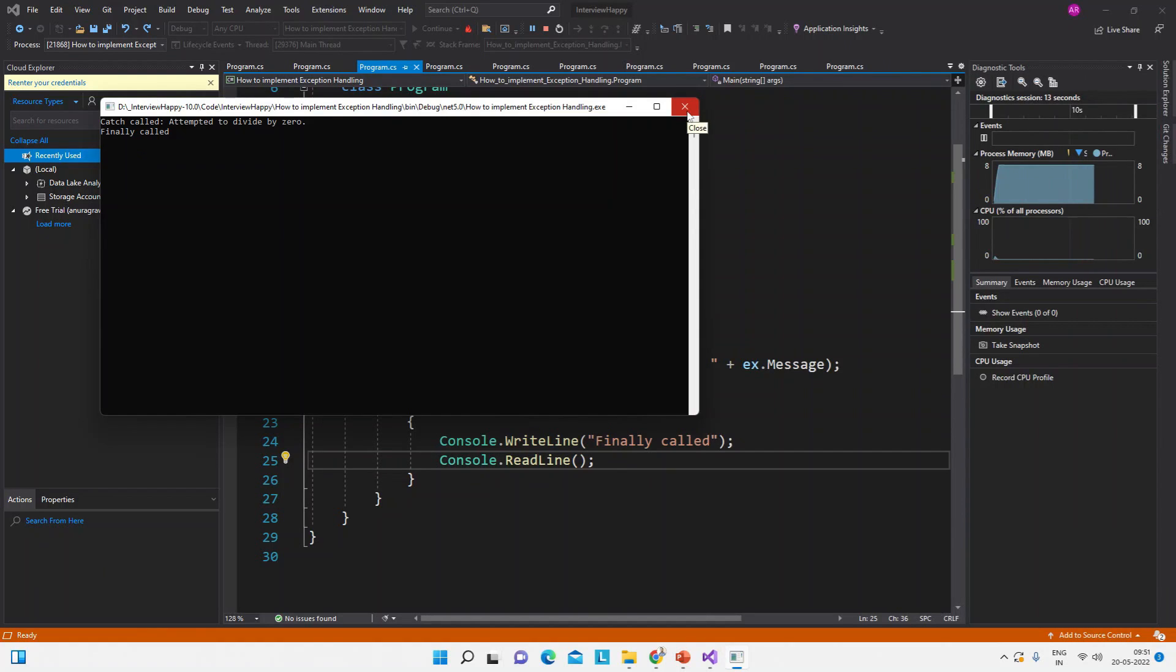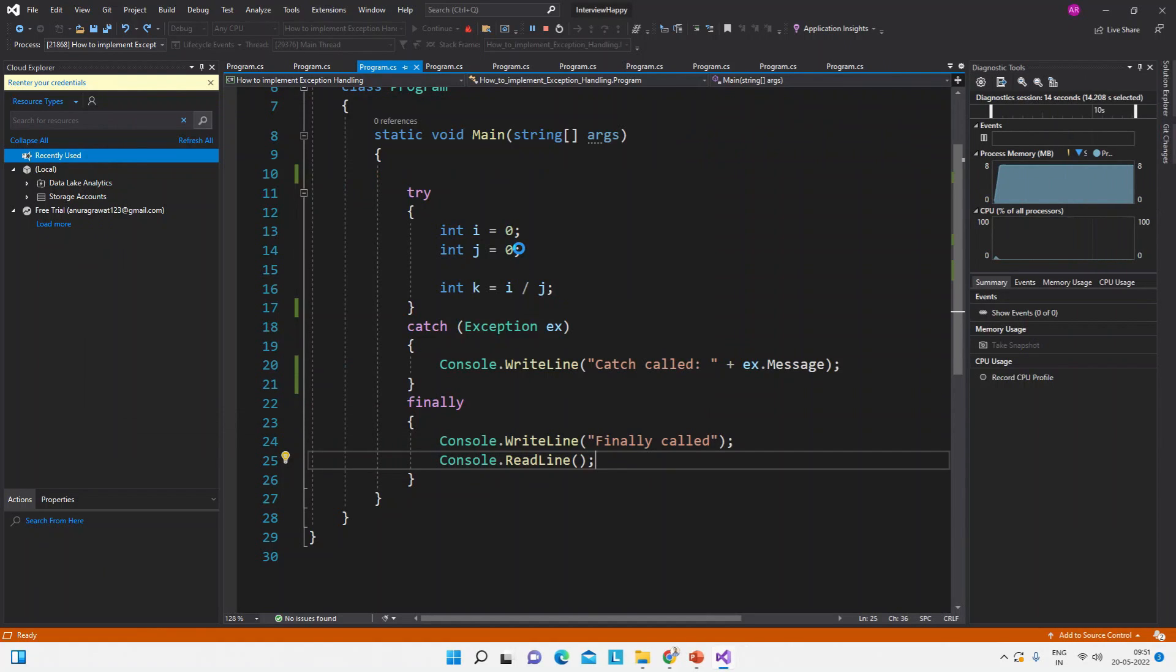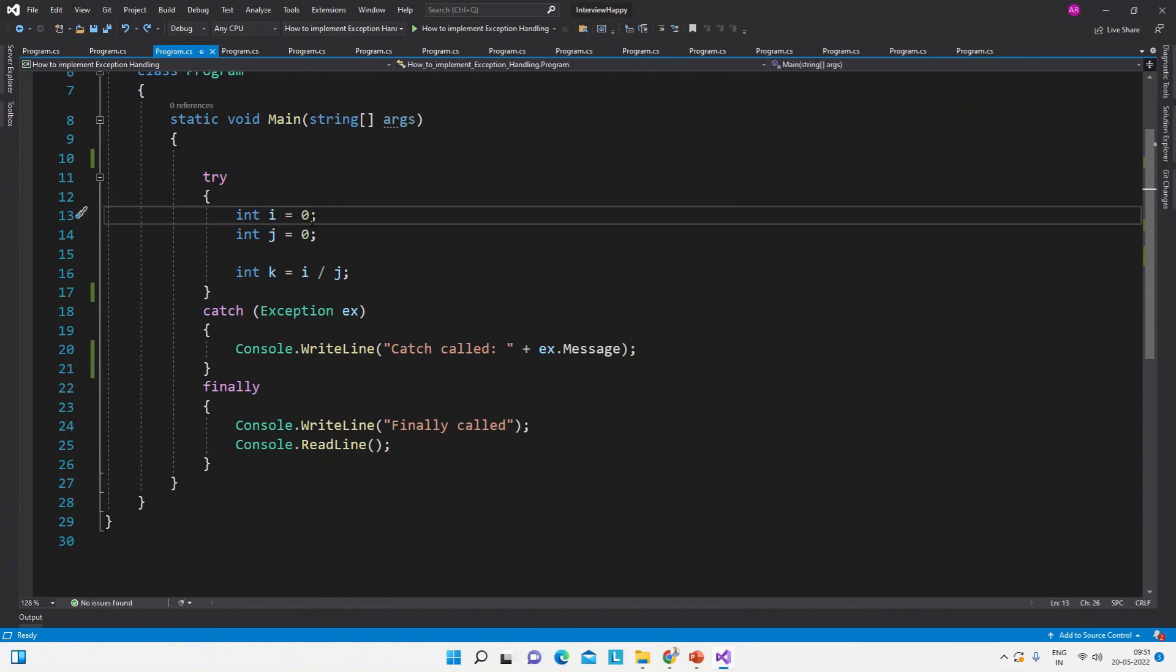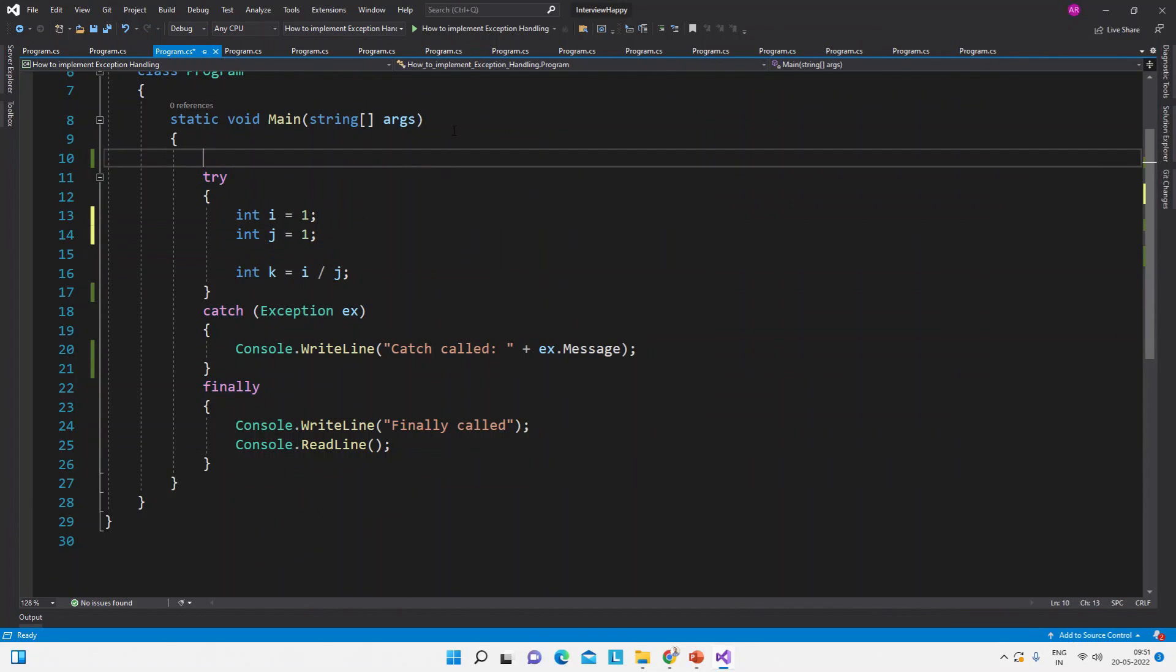Now let me show you without if there is no error. So suppose we will try to divide one by one. So this is possible and this will not throw an error. So let's see the output.